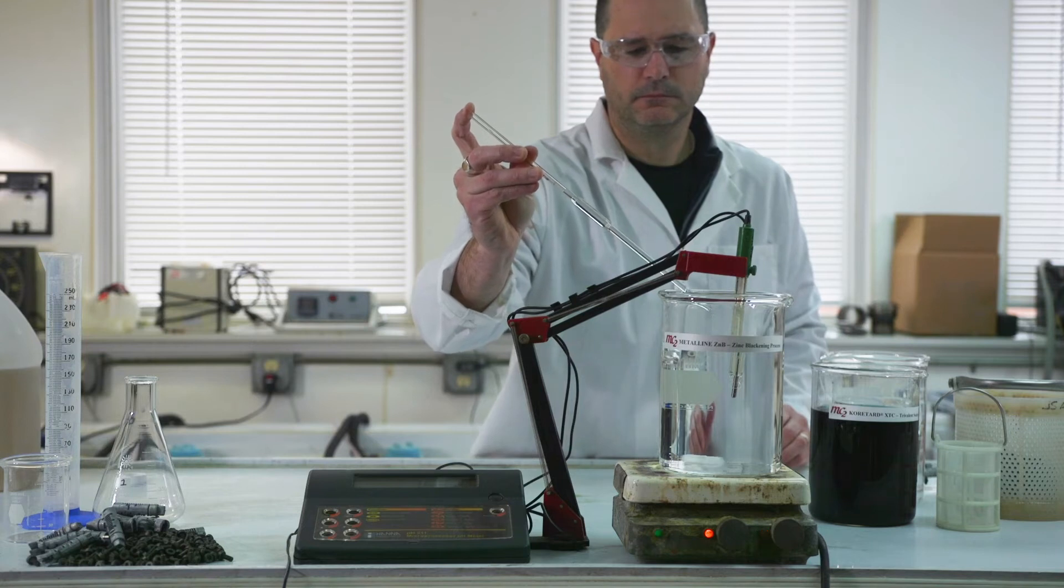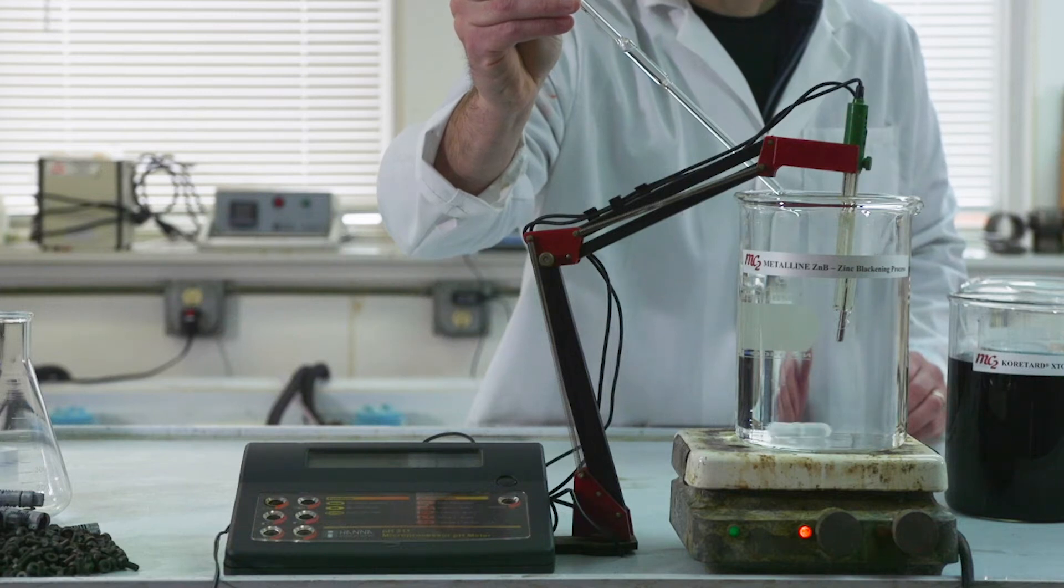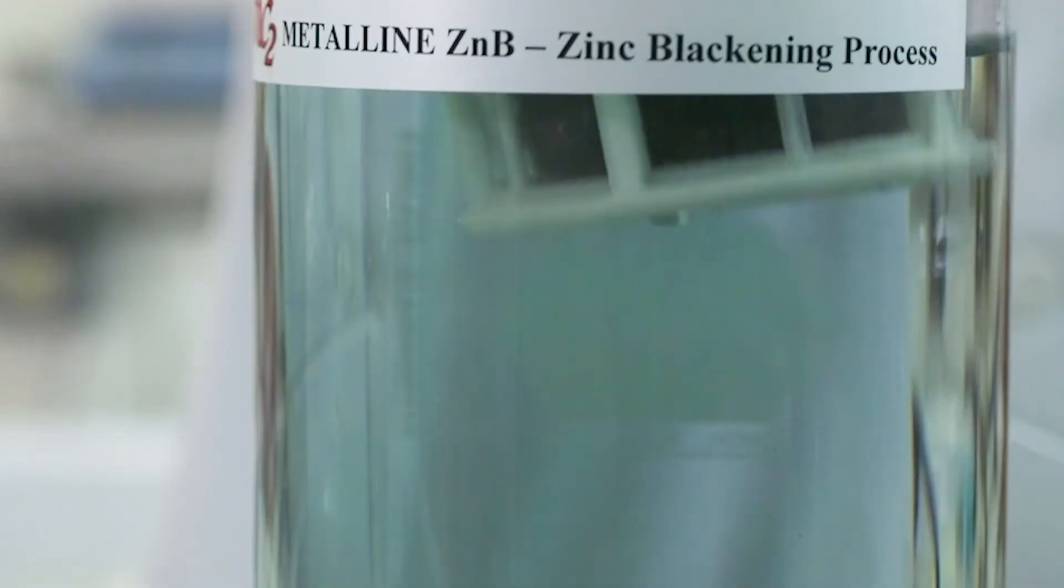MetaLine ZMB is made up at 20% by volume and has an operating temperature of 120 degrees Fahrenheit. The pH of the solution is important and is maintained at 3.5 with dilute sulfuric acid.